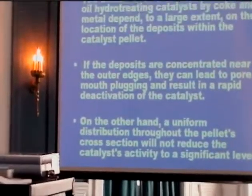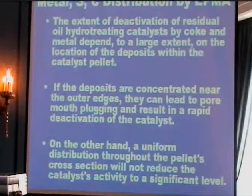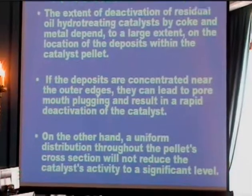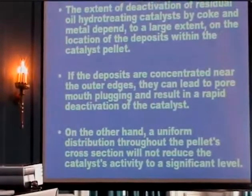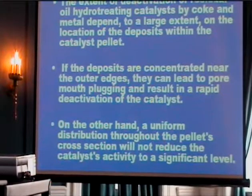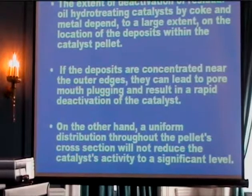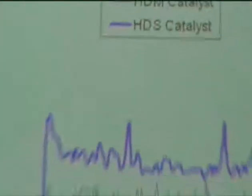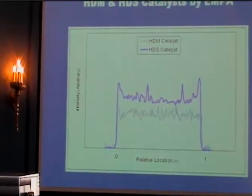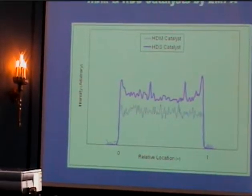One important aspect of metal deposition with regard to deactivation is the metal profile and extent of deactivation. If deposits are concentrated near the outer surface, they can lead to pore mouth plugging and rapid deactivation of the catalyst. On the other hand, a uniform distribution throughout the pellet cross section will not reduce catalyst activity. The nickel distribution in catalyst A and catalyst B was found to be uniform along the pellet.